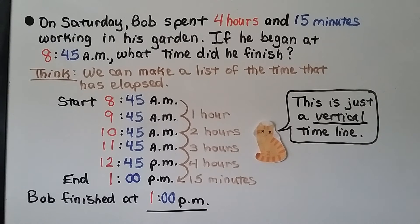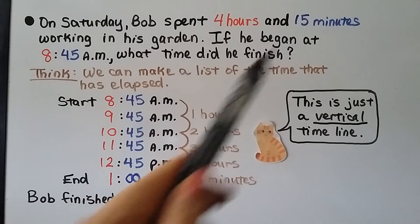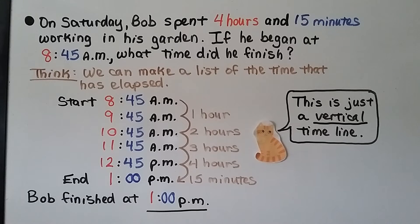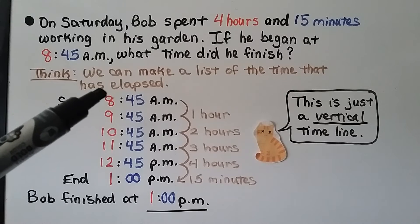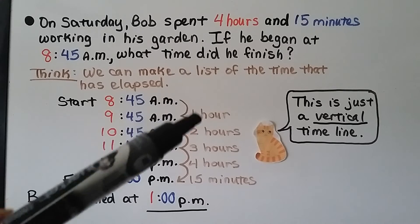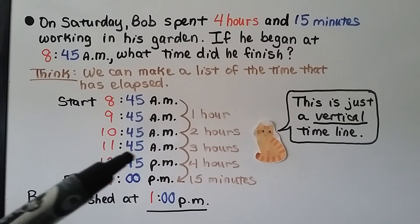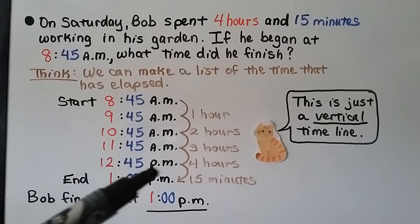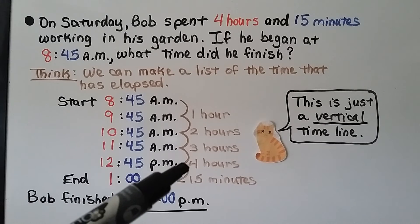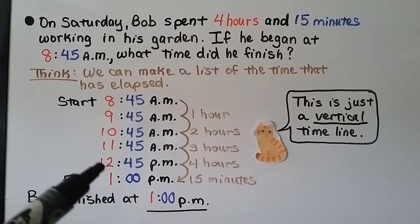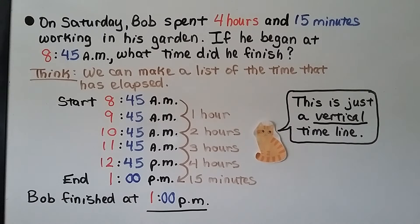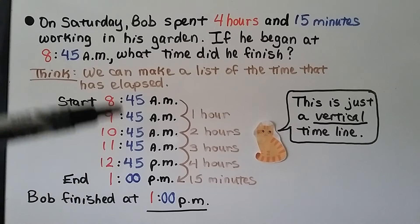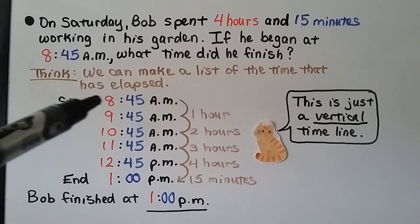On Saturday, Bob spent 4 hours and 15 minutes working in his garden. If he began at 8:45 a.m., what time did he finish? We have the start time and elapsed time of 4 hours and 15 minutes. We can make a list: 8:45 a.m. to 9:45 a.m. is 1 hour; to 10:45 a.m. is 2 hours; 11:45 a.m. is 3 hours; 12:45 p.m. is 4 hours (it switches after 12 noon). We need 15 more minutes past 12:45 p.m., which is 1:00 p.m. Bob finished working in his garden at 1:00 p.m. This list is just a vertical timeline.